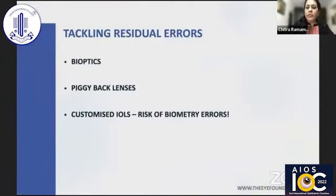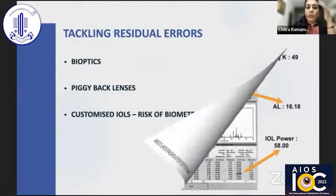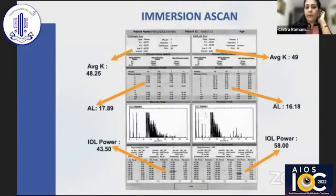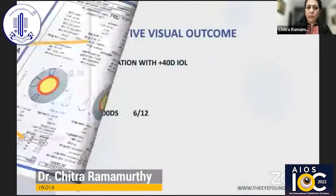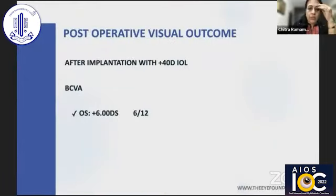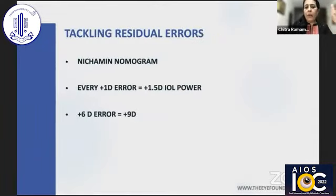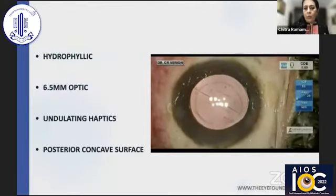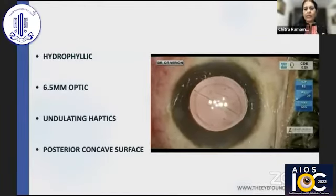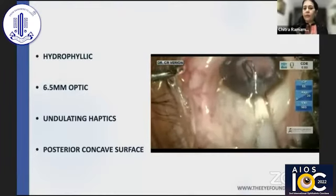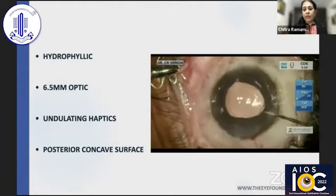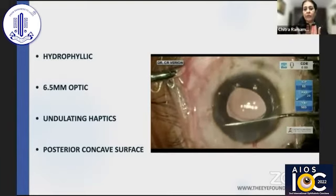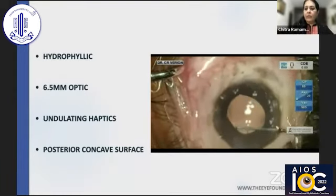For residual refractive error in a very small eye, you could do bioptics on the cornea if corneal thickness allows, use a piggyback lens, or use customized IOLs — but be conscious of the huge spherical aberrations with very large-power IOLs. In this case, immersion biometry gave two different IOL powers; I implanted a 40-diopter IOL and ended up with plus six diopters residual. Using Echelman's nomogram and multiplying by 1.5 gives nine diopters. The ideal piggyback is an Alcoflex lens of a different material from the primary lens — a large hydrophilic optic avoids pupillary block and photoptic symptoms, with insulating haptics providing stable seating and a posterior concave surface preventing interlenticular opacification.